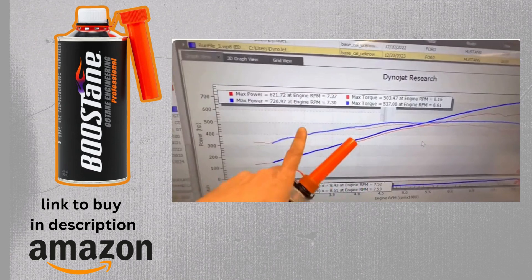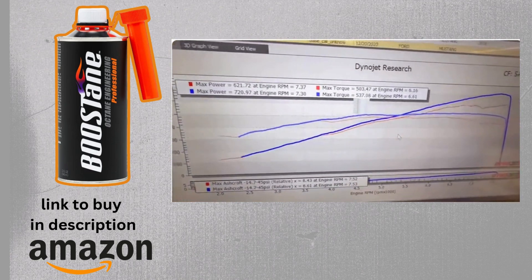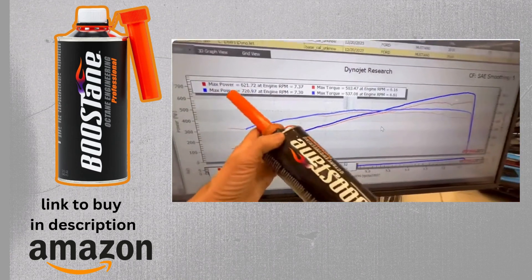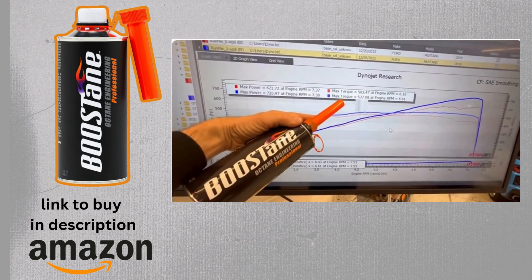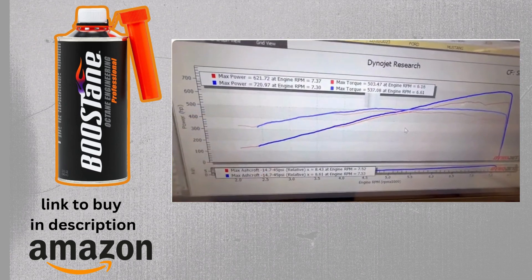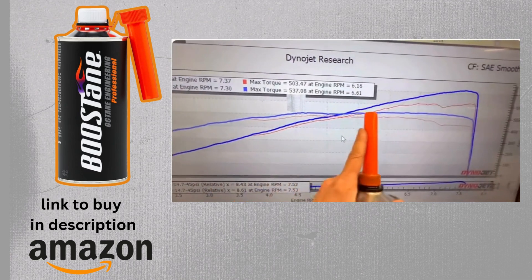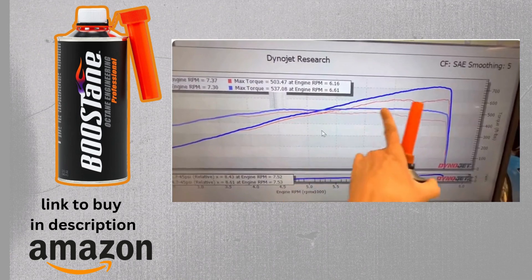Now, I know that this car on good 93 makes about 660 to the tire. That's just what she does on 93. However, whatever this fuel was, plus one can of this, 99 horsepower. Didn't change the tune. Didn't change the pulley. Picked up almost 100 horsepower. You can see how happier the car is. It's adding timing through the whole run.